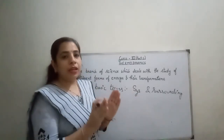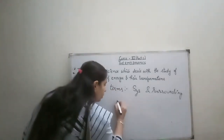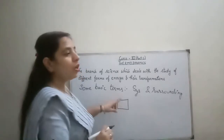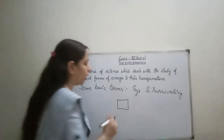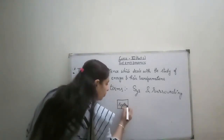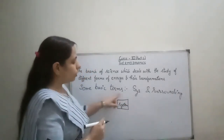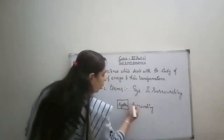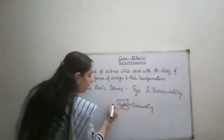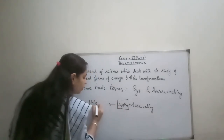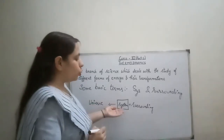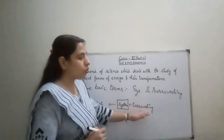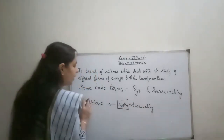The portion we want to observe, where some chemical reaction is taking place and we are observing it — that is the system. And what is the surrounding? Everything around this system is known as the surrounding. The system and the surrounding together are termed as the universe. This system is further of three types: open system, closed system, and isolated system.